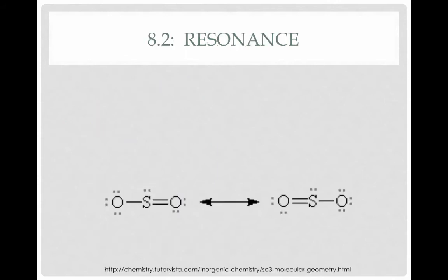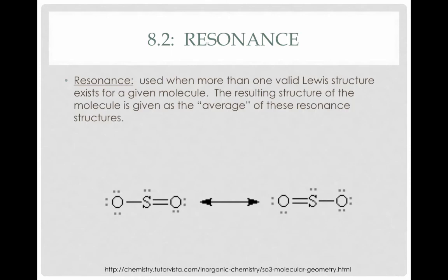There are two more small points before we end this video. The first is resonance. Occasionally there's more than one valid Lewis structure for a given molecule. For example, the SO₂ molecule could have the double bond between sulfur and the first oxygen, or between sulfur and the second oxygen. These are different structures, and in reality the bond is an average of a single and a double. We represent this by drawing both structures connected with a double-headed arrow, indicating the actual structure is a blend of the two.